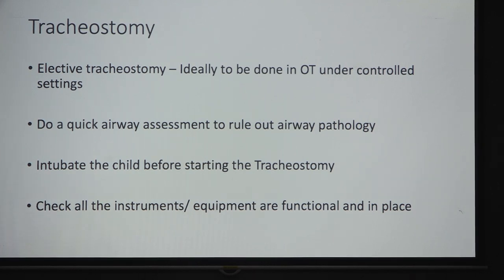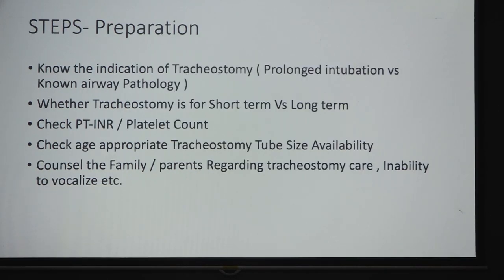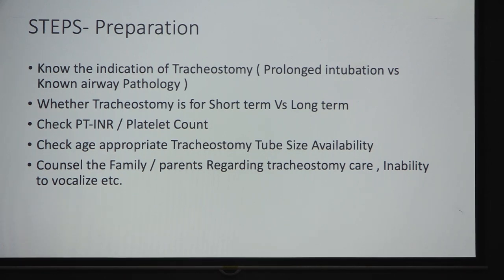Check all instruments and equipment available. The first step is preparation: know the indication — is it prolonged intubation or a non-airway pathology? Is the tracheostomy short-term or long-term? Always check PT-INR and platelet count. Check for age-appropriate tube size and always keep two sizes available, as the anticipated size may not fit. Counsel the family and parents regarding tracheostomy care and the inability to vocalize.